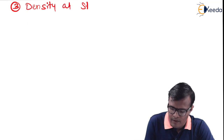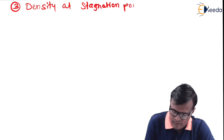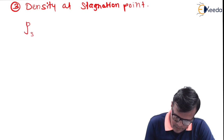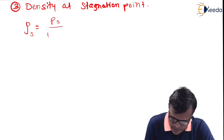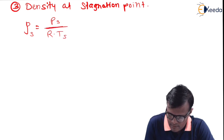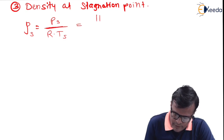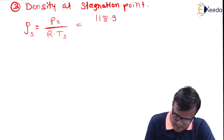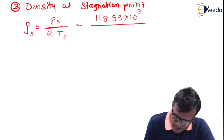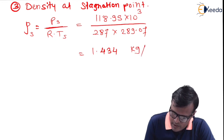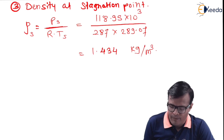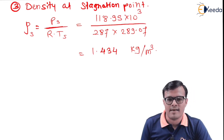Third is density at the stagnation point. Row s (ρs) can be evaluated as Ps upon R into Ts — a simple formula. We have already calculated both terms and R is known. Dividing by R which is 287 into 289.07, we get density equal to 1.434 kg per meter cubed. In this way we have calculated all the terms asked in the problem.